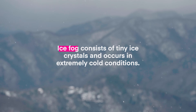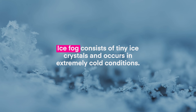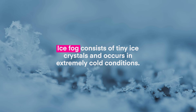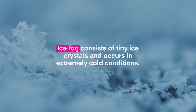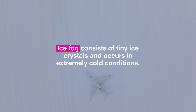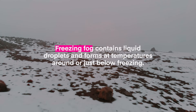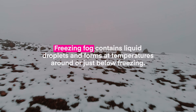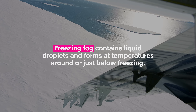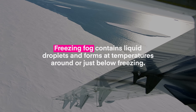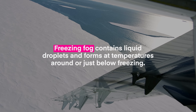It's important to differentiate between freezing fog and ice fog. Ice fog resembles freezing fog, but it consists of tiny ice crystals and happens in extremely cold conditions — well below 32°F or 0°C. Freezing fog, on the other hand, contains liquid water droplets and forms around temperatures right at or just below freezing.